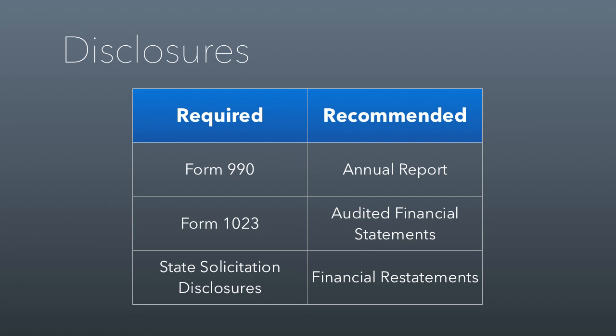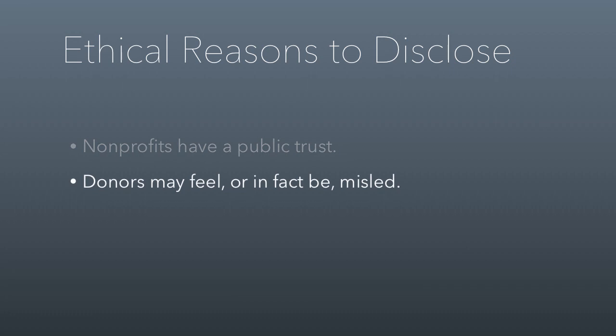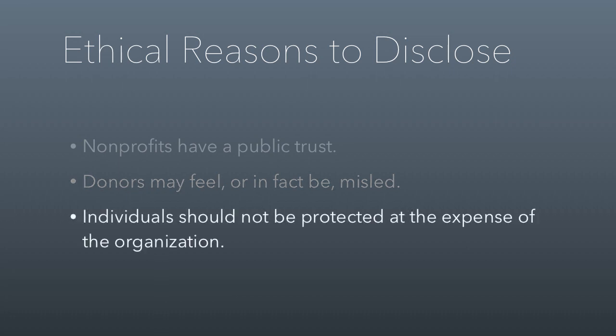When thinking about whether to disclose information to the public, there are a few things to consider. First, nonprofits have a public trust, and while the 990 is a public disclosure document, it's not always sufficient in terms of what the public has a right to know. It's important to remember that donors may feel or in fact be misled as a result of your failure to disclose — donors will be making donations under false pretenses. Finally, individuals should not be protected at the expense of the organization.